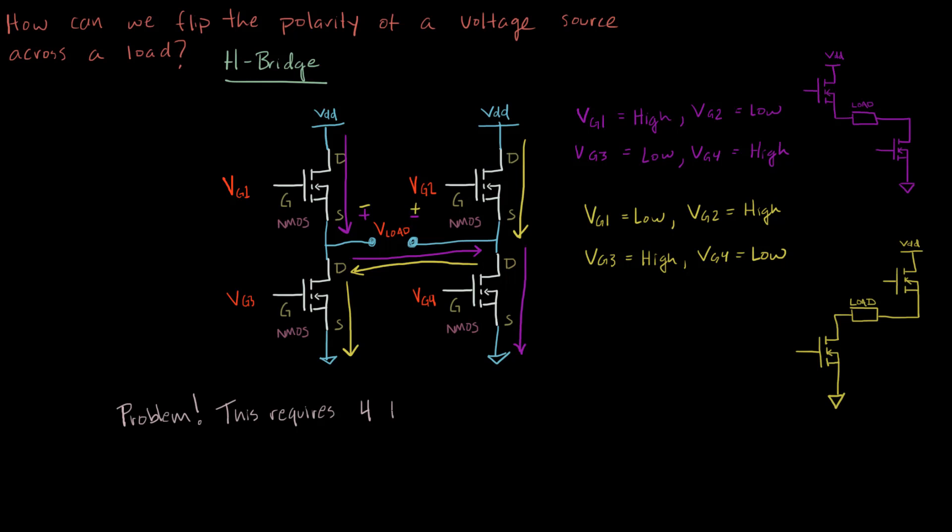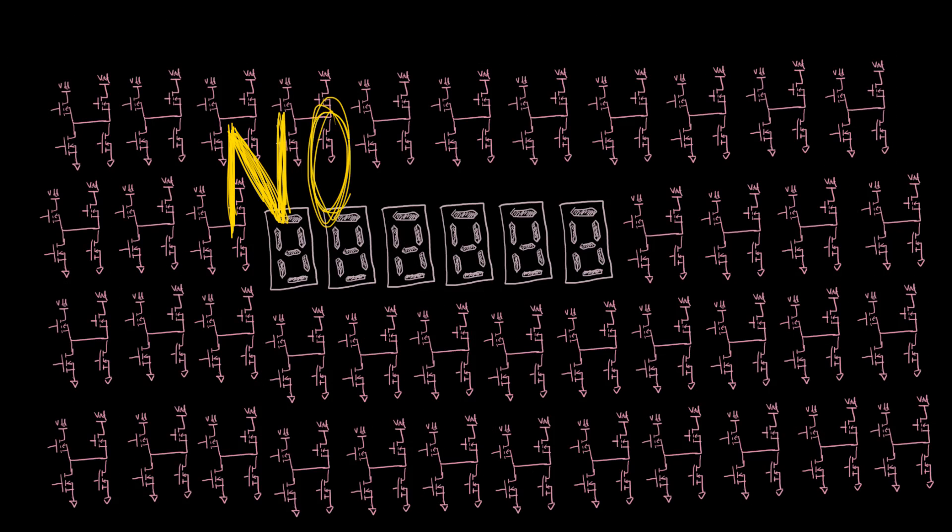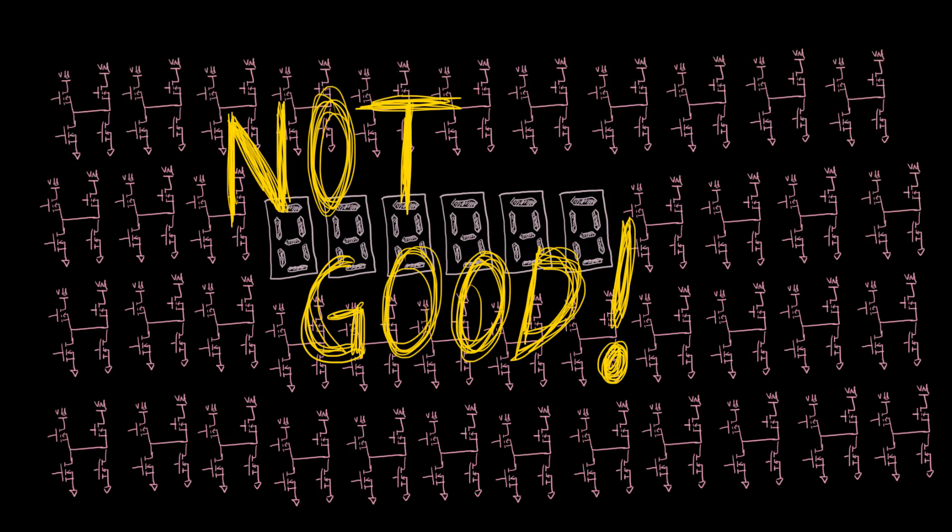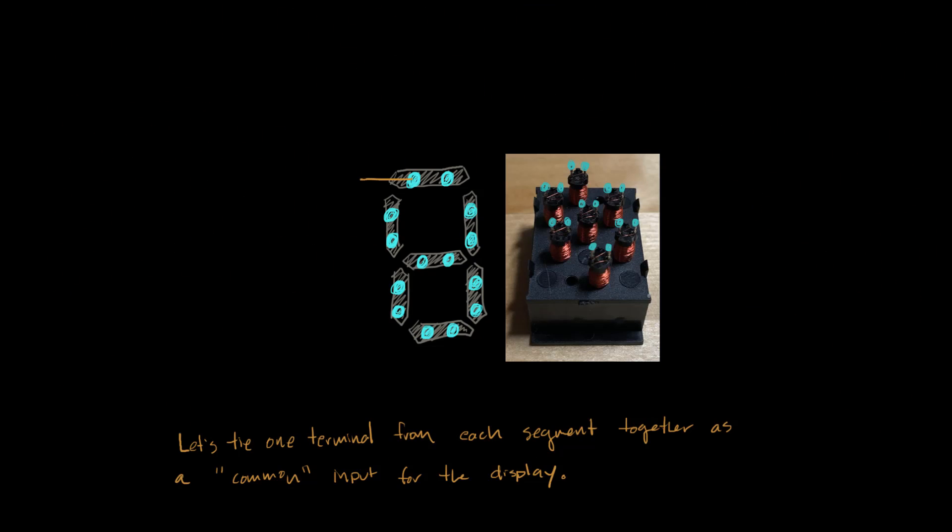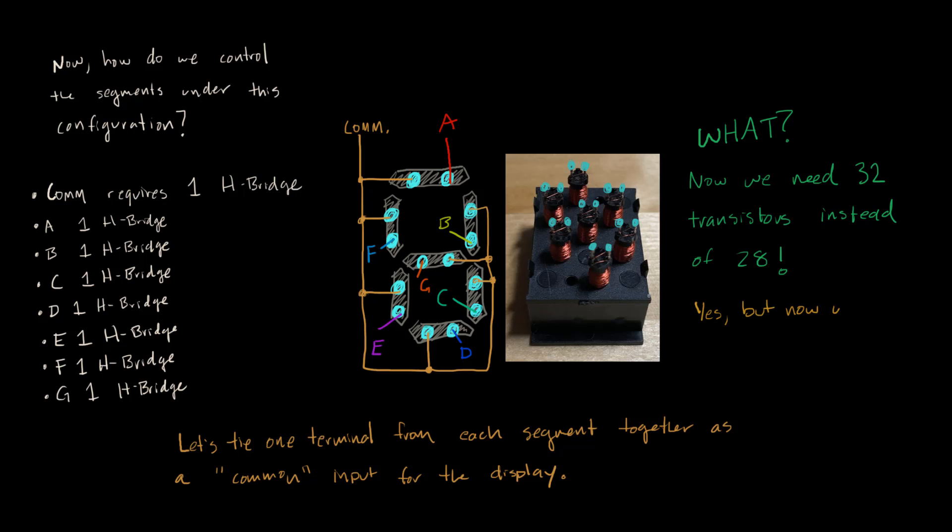This is great, but four MOSFETs per segment means we'll need a total of 28 transistors per display, and given that I want six displays, this is going to take a lot of transistors. Let's try something else. What if we tie one terminal from each segment's coil together as a common? We could then set this to plus 12 volts or to ground and then individually switch the other side of each coil. This now requires eight H-bridges instead of seven, but the advantage now is that A through G can be shared among other seven-segment displays within an array of displays.